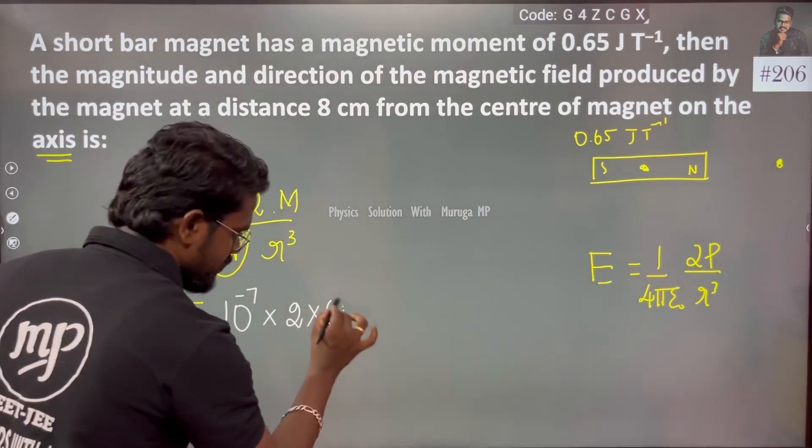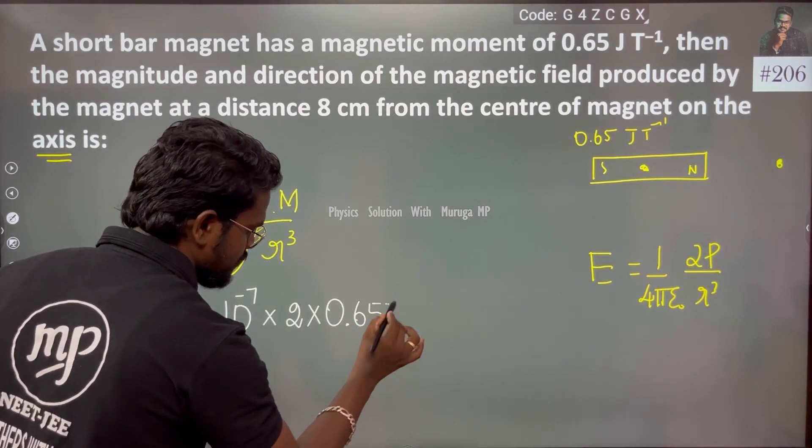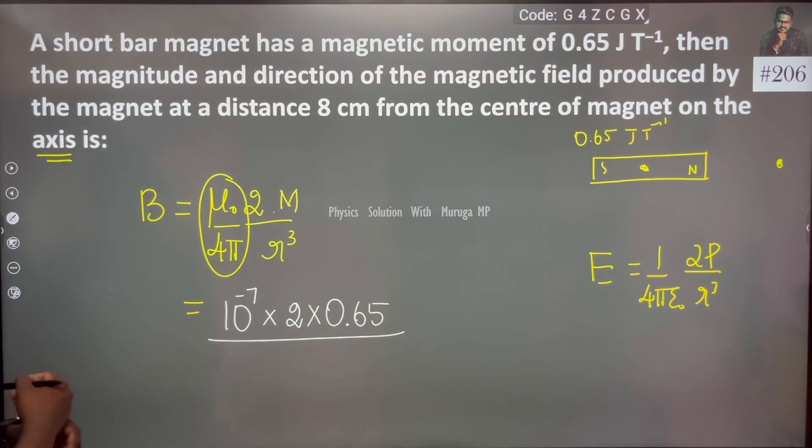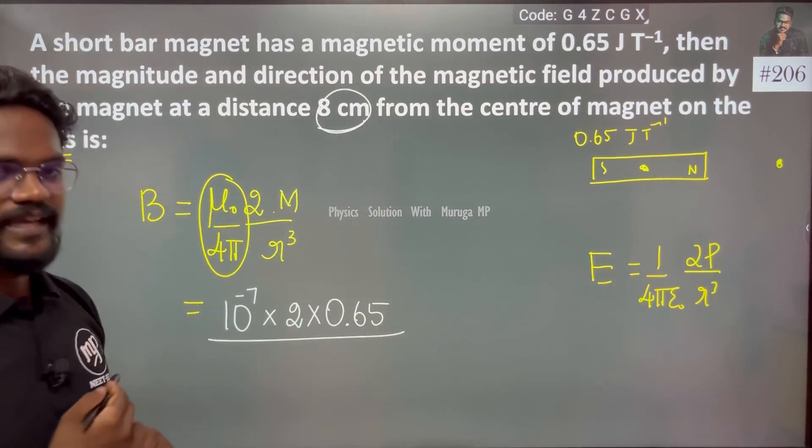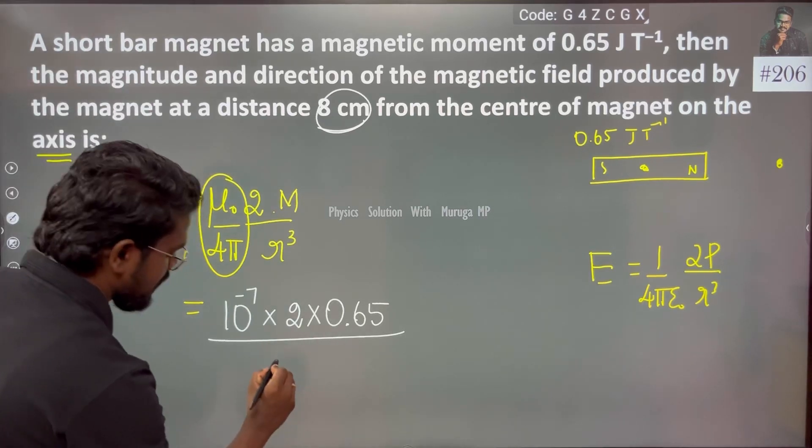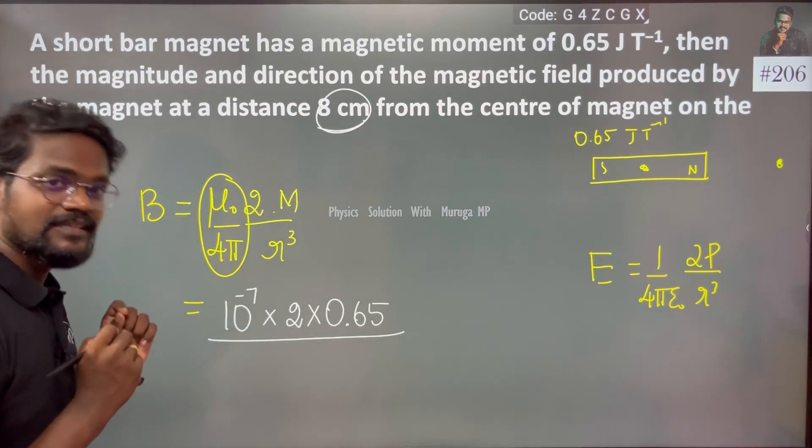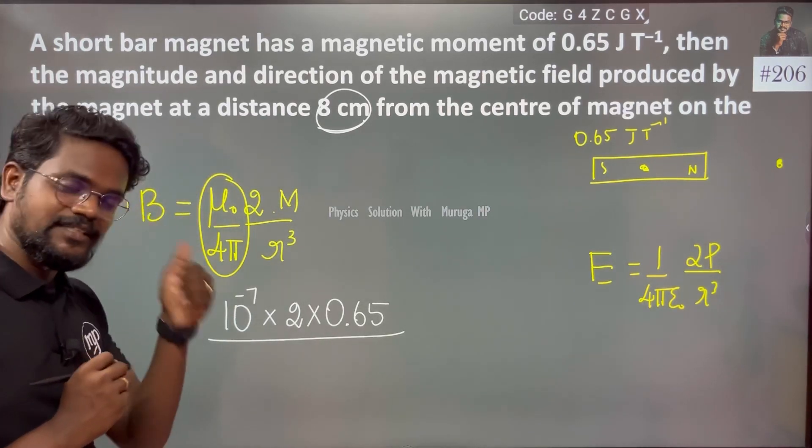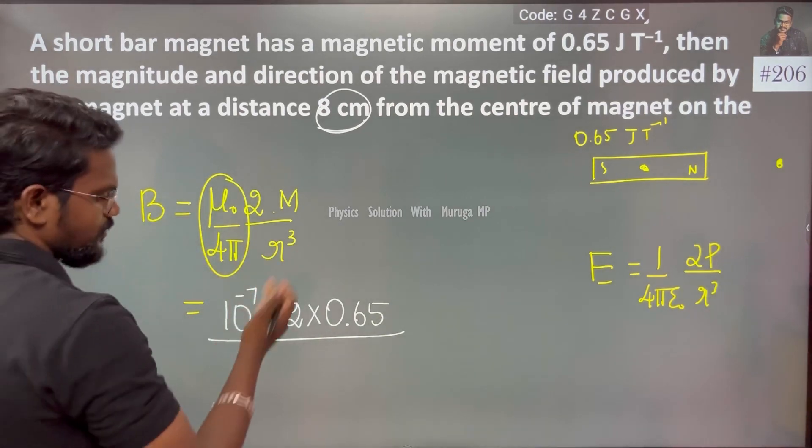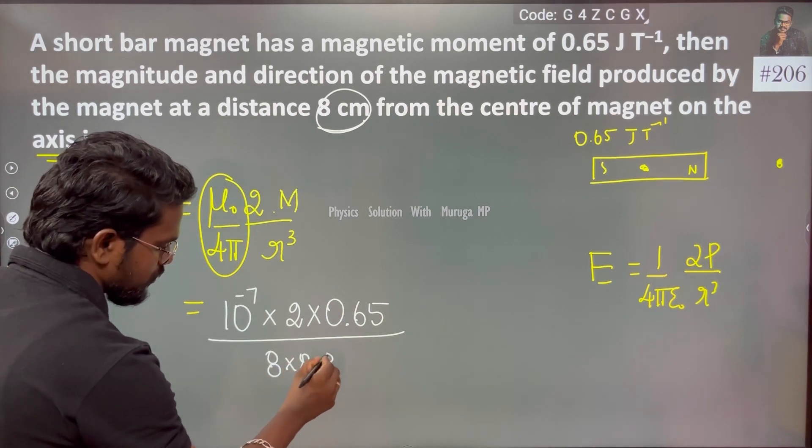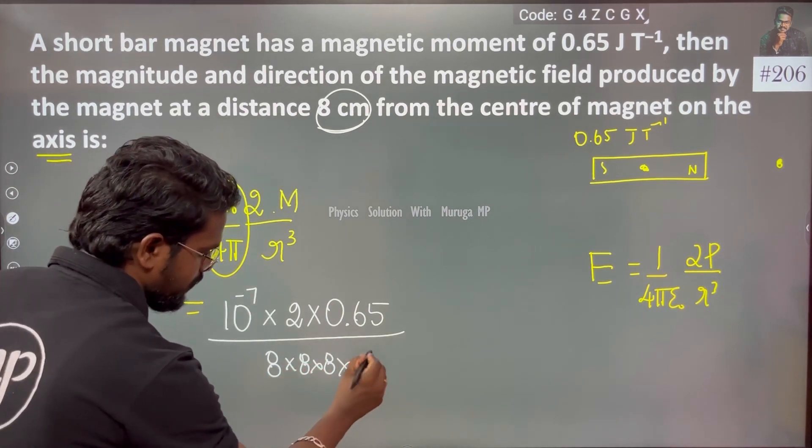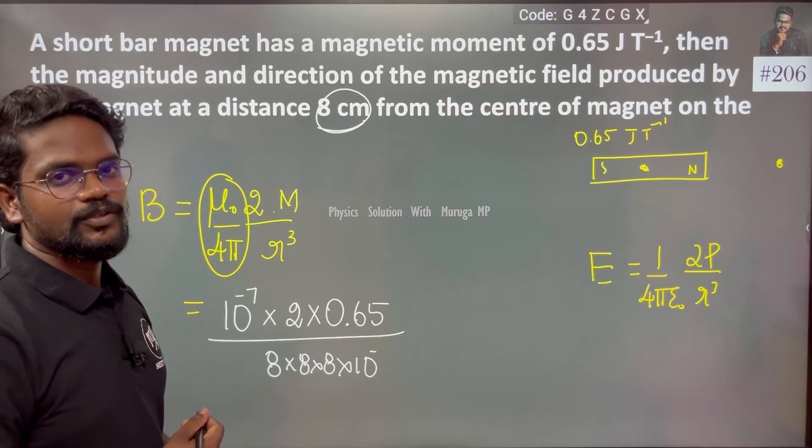Magnetic moment from the question is 0.65 divided by r. Then they have given the distance which is nothing but 8 into 10 to the power minus 2, centimeter to meter minus 2, cube. 8 into 8 into 10 to the power minus 6.